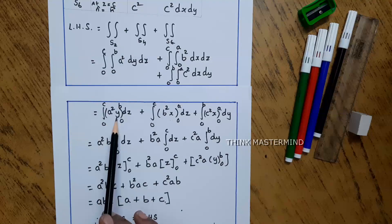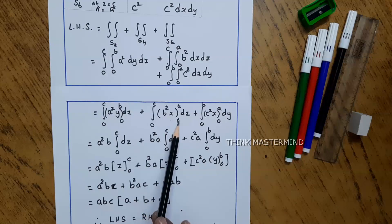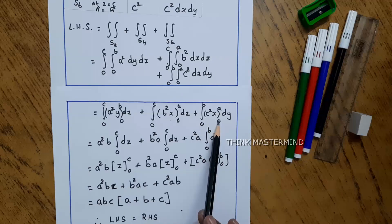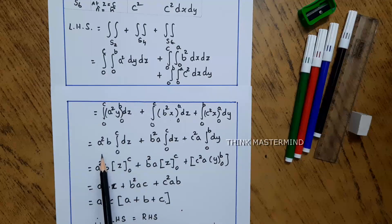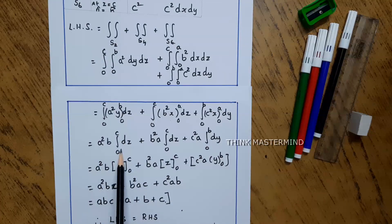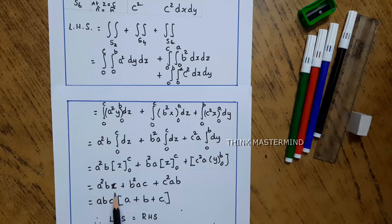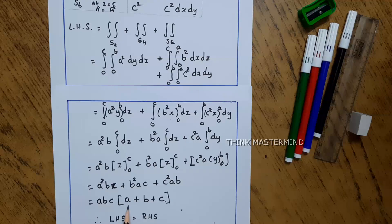Evaluating the integrals: for S2, integrating a² dy gives a²y from 0 to b, then integrating over z from 0 to c gives a²bc. For S4, b²x from 0 to a gives b²ac. For S6, c²x from 0 to a gives c²ab. Summing: a²bc + ab²c + abc² = abc(a + b + c), which is the left hand side of the Gauss Divergence Theorem.